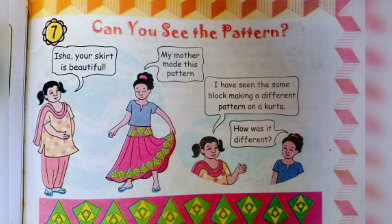Chapter 7: Can You See the Pattern? There are two girls — Isha and her friend. Isha's friend says, 'Isha, your skirt is beautiful. My mother made this pattern.' The friend also says, 'I have seen the same block making a different pattern on a kurta — the same blocks used in a different way.'